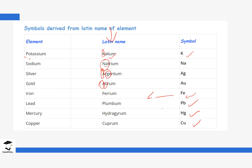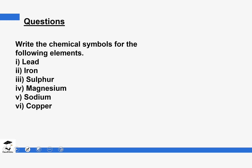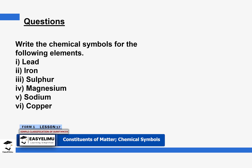You do not have to remember all the Latin names. The only thing you need to remember is the symbols themselves, because these are the ones that differ from the English-derived symbols. Make sure you know which elements have Latin-derived symbols so you do not mix them up.